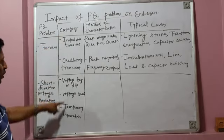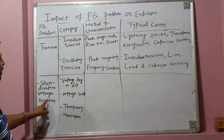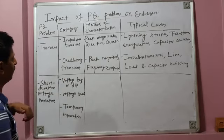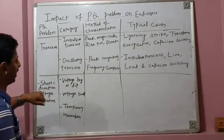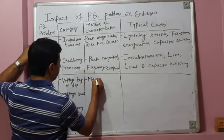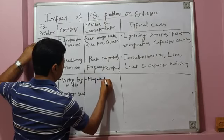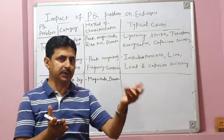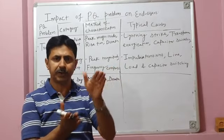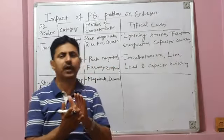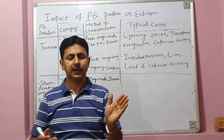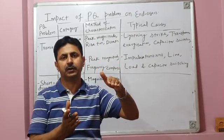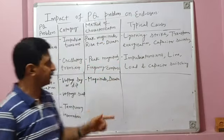Long duration voltage variations have three categories: under voltage, over voltage, and sustained interruption. Under voltage is categorized by magnitude and duration; causes include switching on of large loads and capacitor de-energization. Under voltage is a long-duration voltage dip — lasting from a few seconds up to about one minute. When a large load is switched on, voltage dips; when a shunt capacitor bank at a substation is de-energized, the voltage profile drops because the capacitors improve voltage profile.